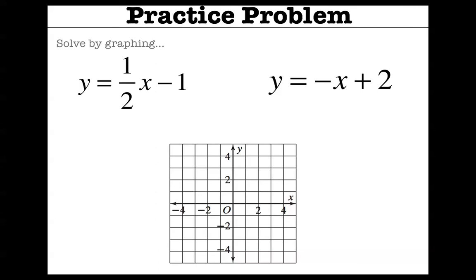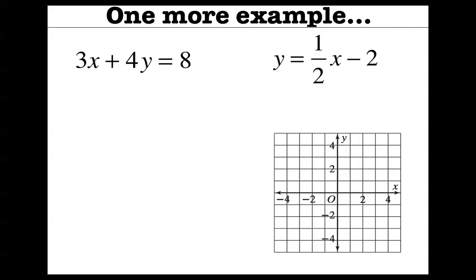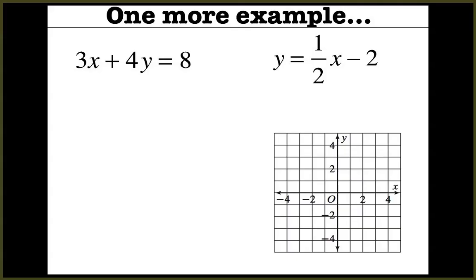I'm going to give you one more example, just in case you want to see a bit more — though if you already get it, you can skip this. There's something a little more complicated here. Graphing this second equation is pretty easy because it crosses the y-axis at negative 2 and has a slope of one-half, which means it goes up 1 over 2. So you can put dot after dot to see where that line goes.